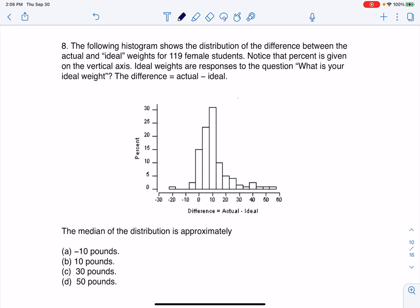So my variable is the difference between these students' actual and ideal weights. That's going to be a continuous numerical variable. Notice that percent is given on the vertical axis, so they're giving us relative frequency on the y-axis.